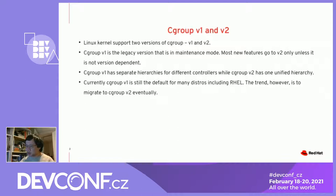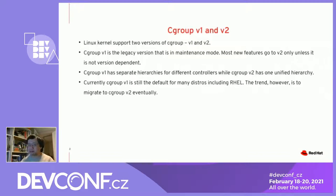Instead of different hierarchies for each controller, we have one single hierarchy for all controllers running in cgroup V2 mode. A controller can be running in either V1 or V2, but not both. So when you set up a system, you have to choose whether you want a given controller to be used in V1 or V2. Currently, most distributions are still using V1 as the default because that is what people have been using in the past. But the trend is that over time more and more distros will switch to V2 as the default, because this is where the new features are coming from. If you want new features that are only in V2, the only way is to switch to cgroup V2.